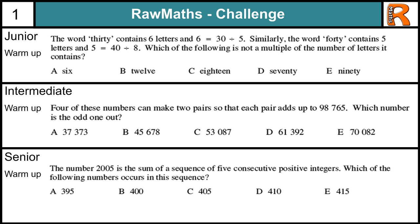So let's have a look at the junior warm-up. We are given a couple of examples. The word 'thirty' contains 6 letters and 6 = 30 ÷ 5. Similarly, the word 'forty' has 5 letters and 5 = 40 ÷ 8. We'll start with 'six'. 'Six' has 3 letters and 6 is in the 3 times table, so therefore it's a multiple.